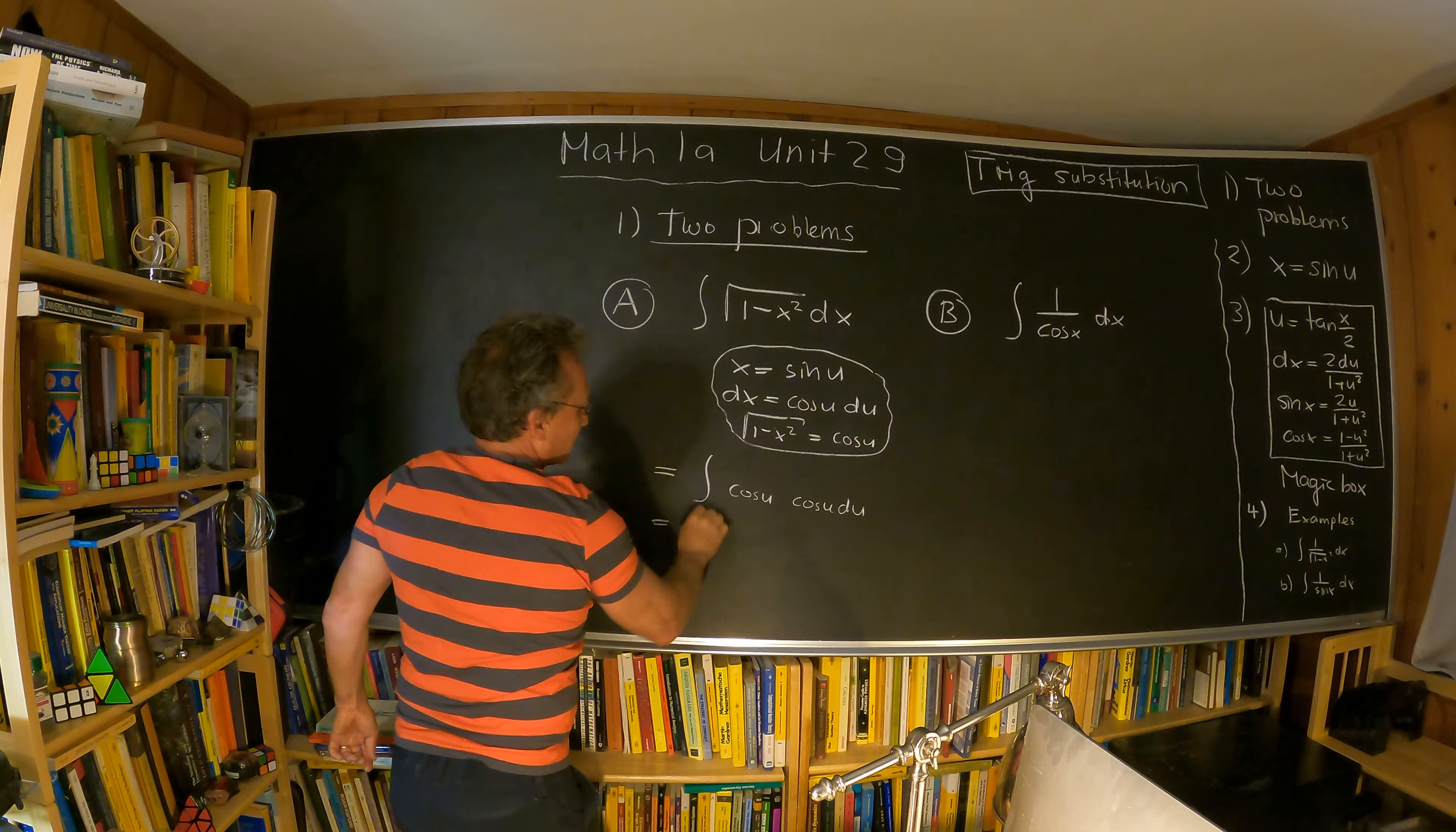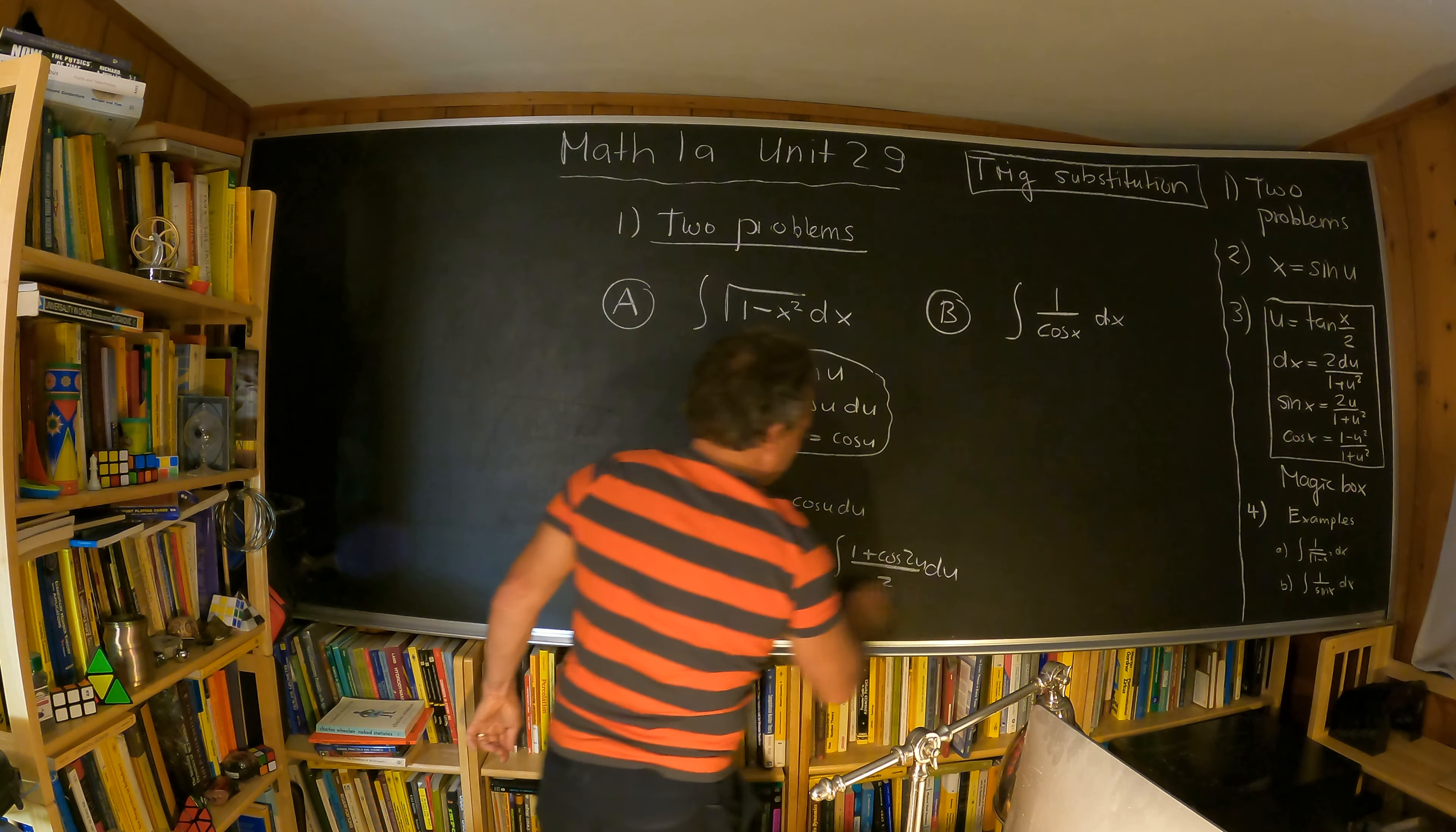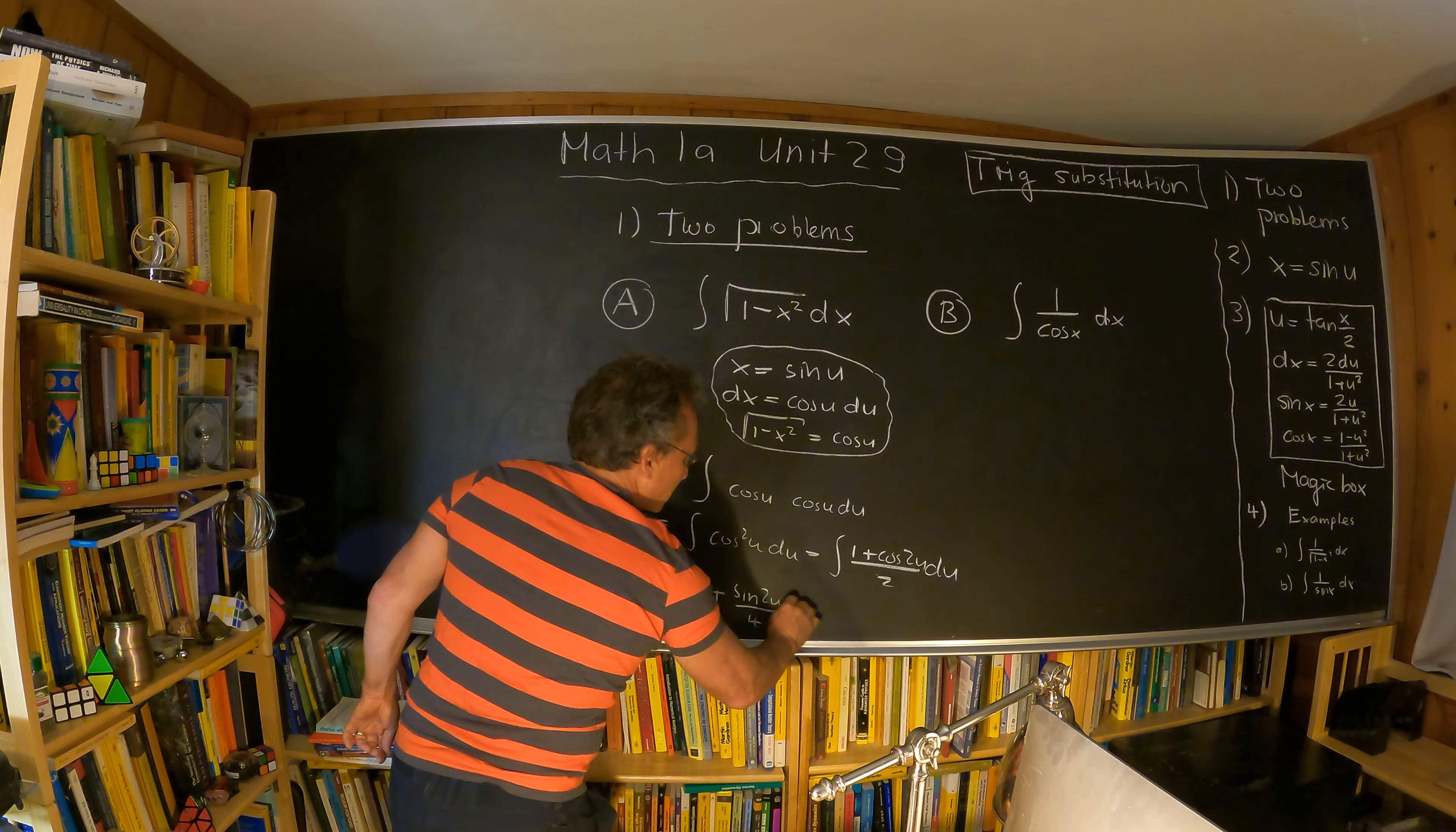And so we have the integral cosine square u du which we can write with the double angle formula as one plus cosine 2u over two. This is no problem to integrate. So that's u over 2 and then plus sine 2u over 4 plus c.